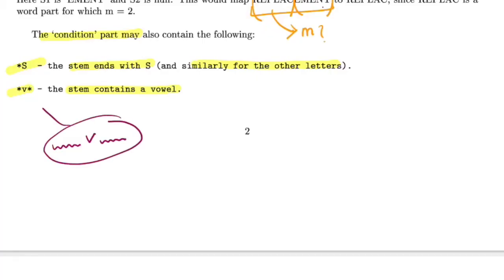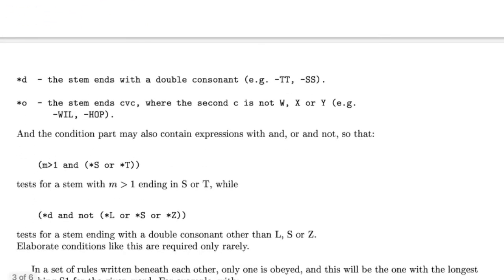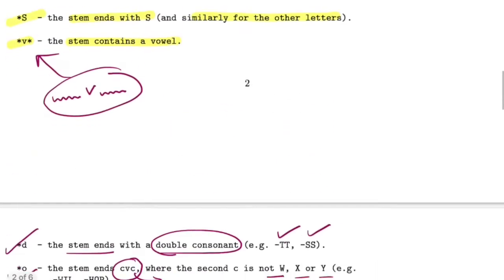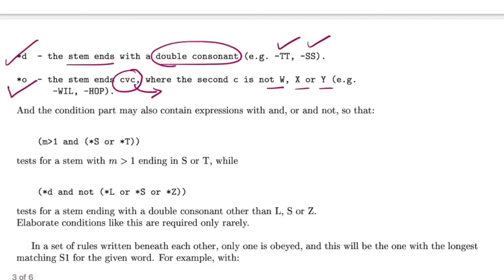You have *d where the stem ends with double consonants, like double T or double S and all these variations. Or you could have *o where a stem ends with the particular pattern C V C, where the second C will not be W, X, O, or Y. These are the four patterns the authors have defined.